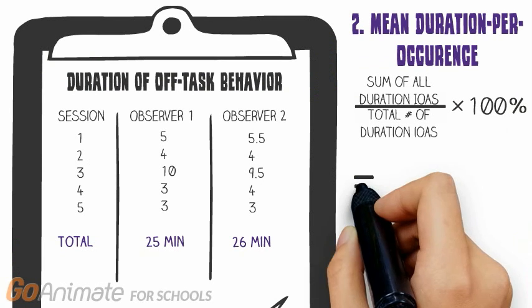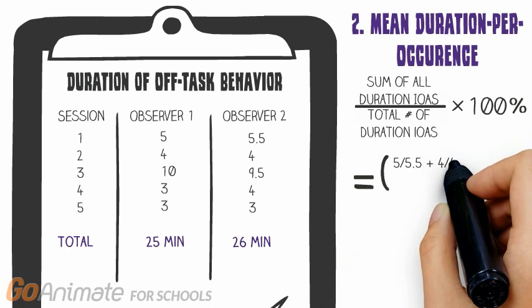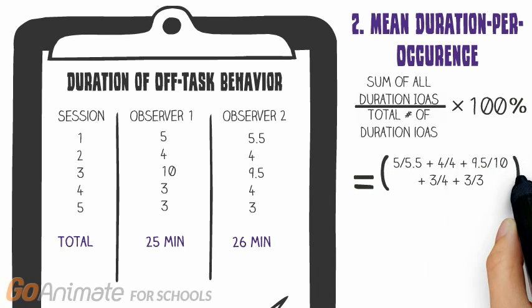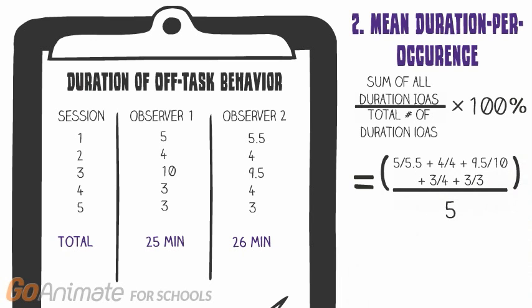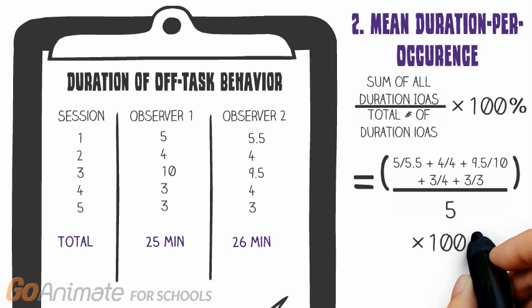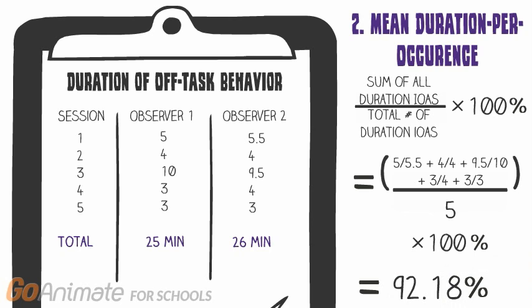In our example, we divide the smaller duration by the larger duration for each session. We calculate the sum and then divide by the number of sessions, in this case 5. The average of these 5 sessions results in a Mean Duration per Occurrence agreement score of 92.18%.